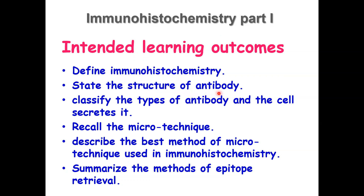Learning outcome number two: to state the structure of the antibody. Number three: to classify the types of antibody and the cell that secretes each antibody. We will also review microtechnique and describe the best method of microtechnique used for immunohistochemistry, because we started immunohistochemistry with the frozen technique.